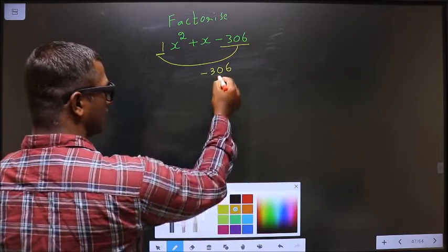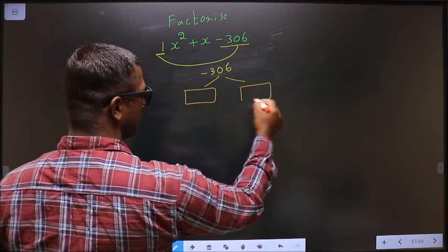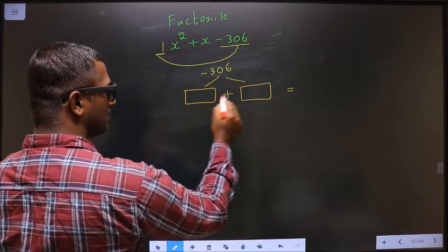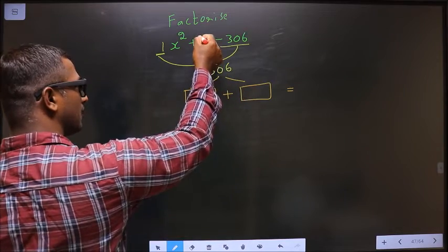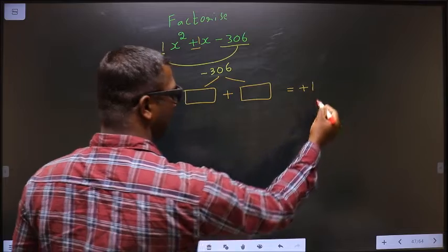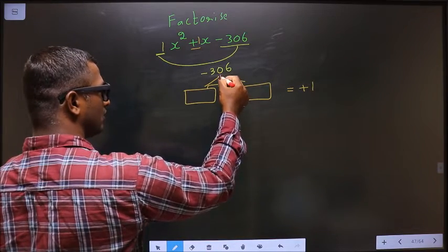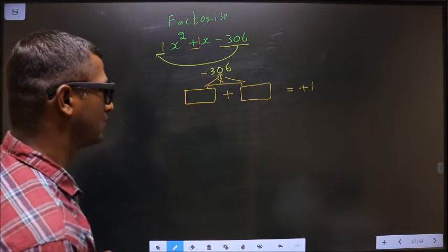Now you should look for two numbers such that when you add the two numbers, you get the middle coefficient, that is +1, and when you multiply these two, you get -306.